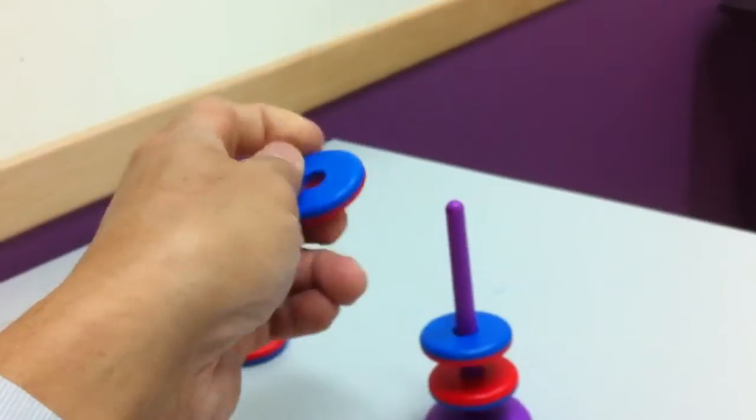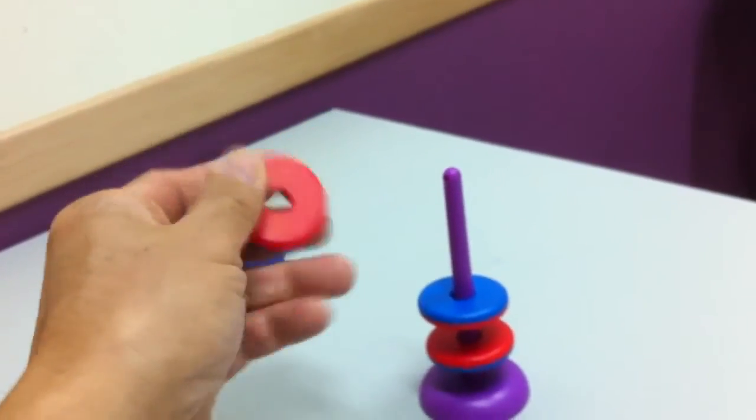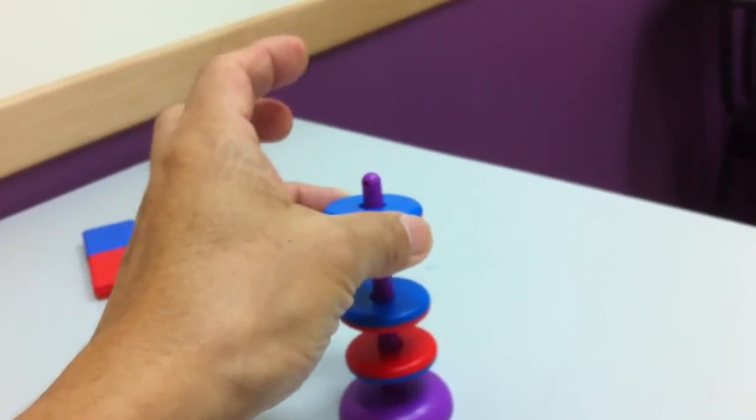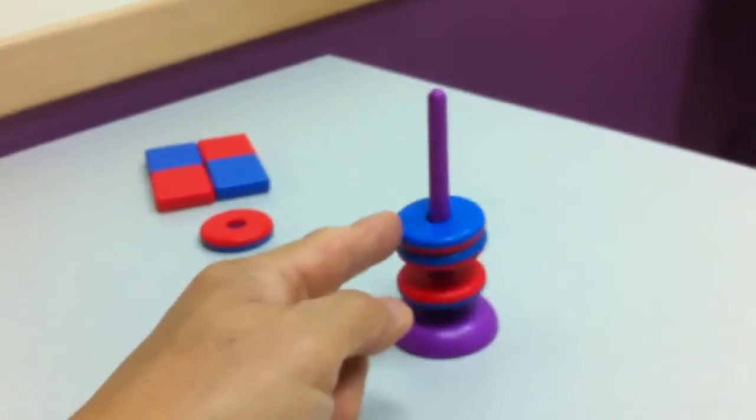If I were to reverse this ring magnet over with the north pole facing the south, well, they will attract each other. Right?